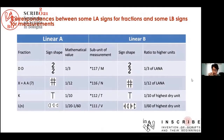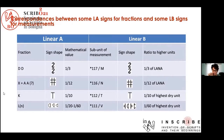Let's now consider that the two Linear B signs for weights we have just mentioned, namely 117 and 116, and two signs for subunits used to measure dry commodities have the same shape as Linear A fractions. This suggests that these Linear B signs were adapted from the Linear A fraction signs. And even though the two systems registered quantities differently, the Linear B system took inspiration from Linear A.